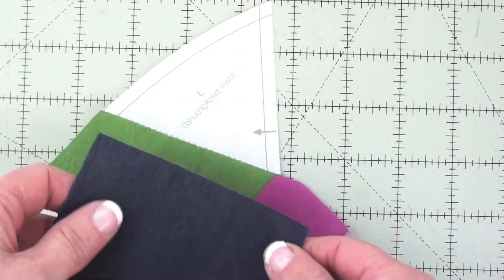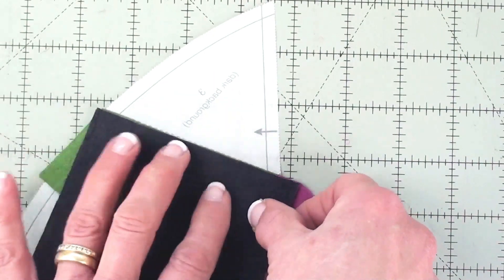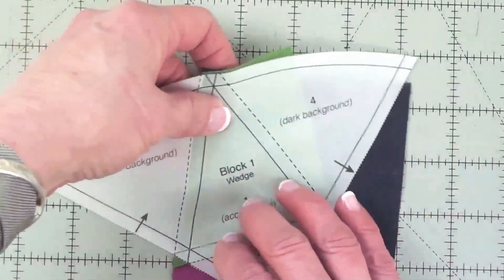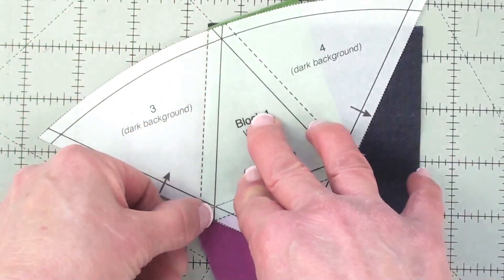Take the number three fabric and center it right there, turn it, and sew all the way across on that solid line.